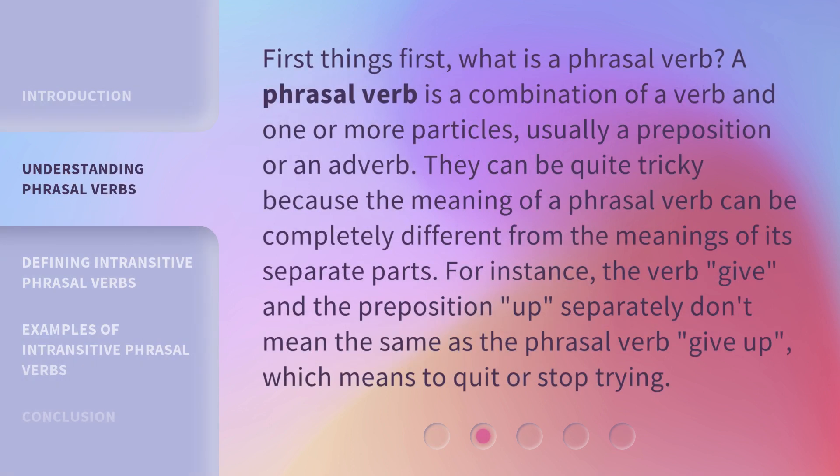First things first, what is a phrasal verb? A phrasal verb is a combination of a verb and one or more particles, usually a preposition or an adverb. They can be quite tricky because the meaning of a phrasal verb can be completely different from the meanings of its separate parts. For instance, the verb "give" and the preposition "up" separately don't mean the same as the phrasal verb "give up," which means to quit or stop trying.